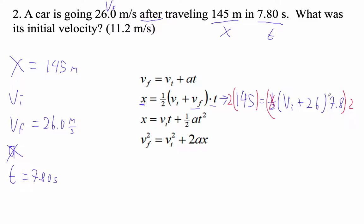So 2 times 145 is indeed 290. So I have 290 equals VI plus 26 times 7.8.